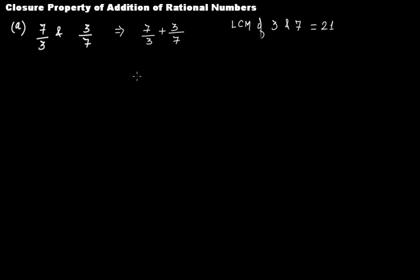LCM of 3 and 7 is actually equal to 21. Now let's add this, so here we have 21. 3 times 7 is 21, so this is 7 times 7, then plus...